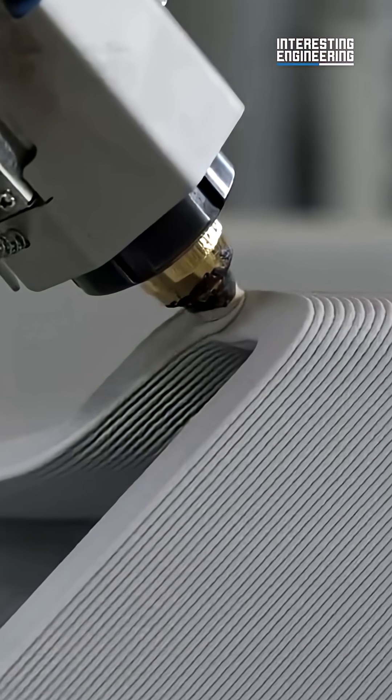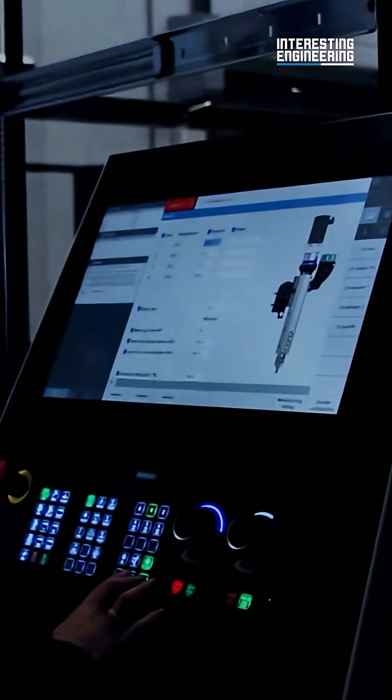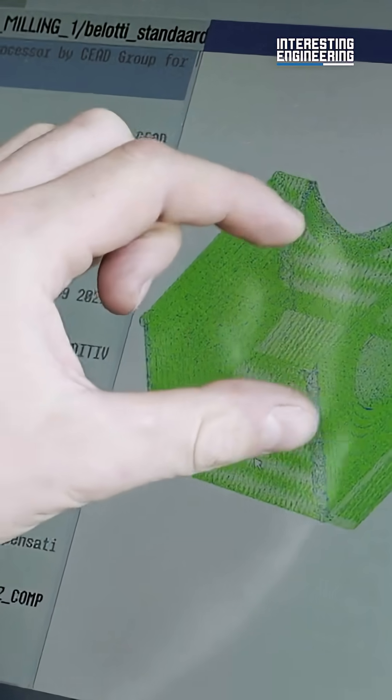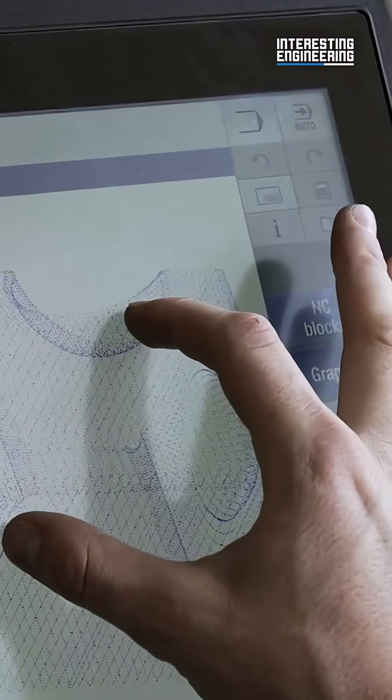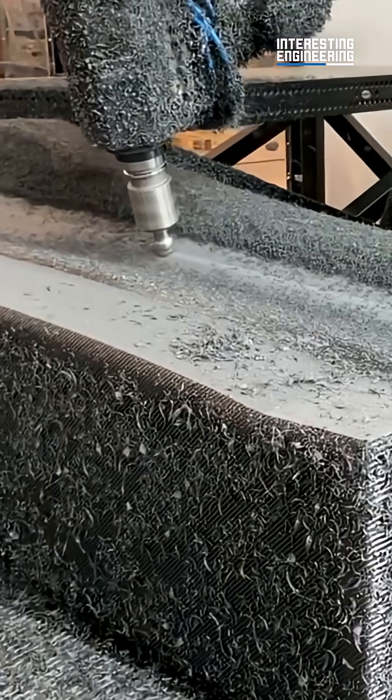Next step is the actual printing. The robots are controlled using Siemens' Synumeric Run My Robot controllers. They ensure the accuracy and precision of the robots, not just for printing, but also for surface finishing with milling spindles.